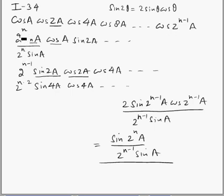So we multiply and divide by 2 to the power number of terms times sine of angle. This angle is the smallest of all these angles, and the smallest angle is a. So you multiply and divide by this term.